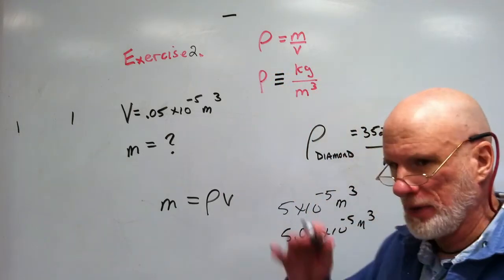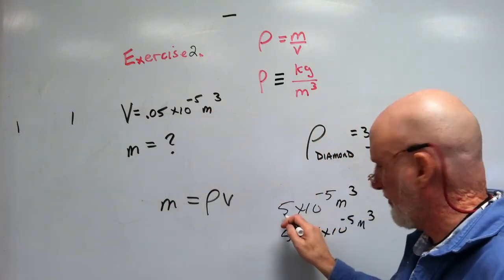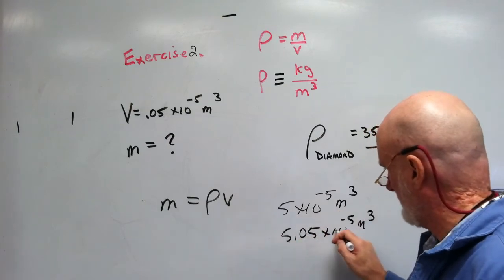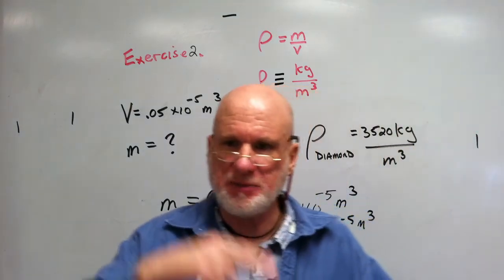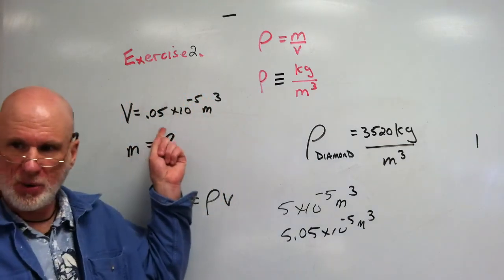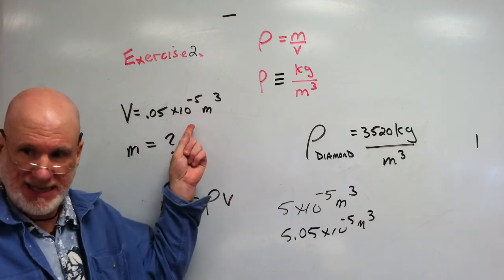So, let's see what we have here. The volume went from 5 times 10 to the negative 5th up to 5.05 times 10 to the negative 5th. So, the displacement of the fluid is 0.05 times 10 to the negative 5th cubic meters.